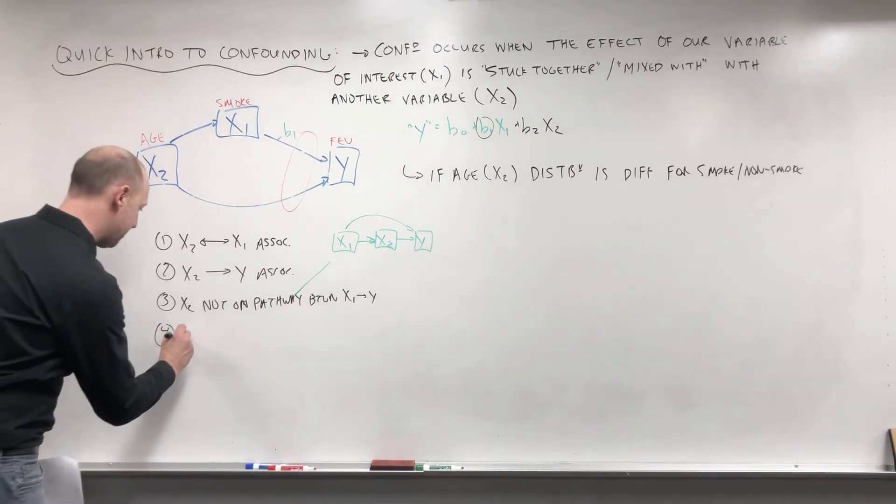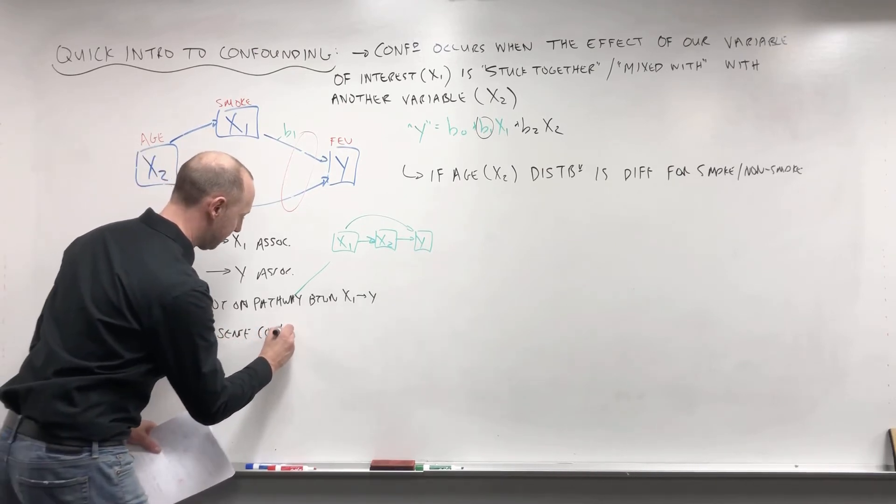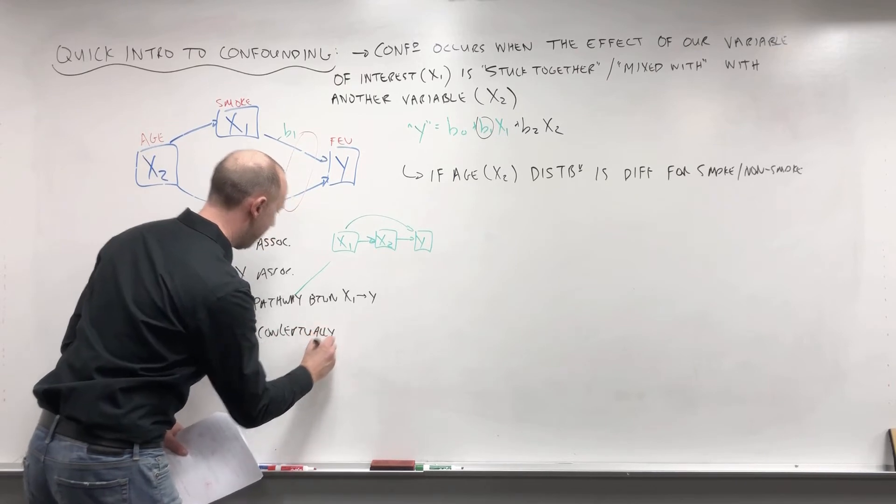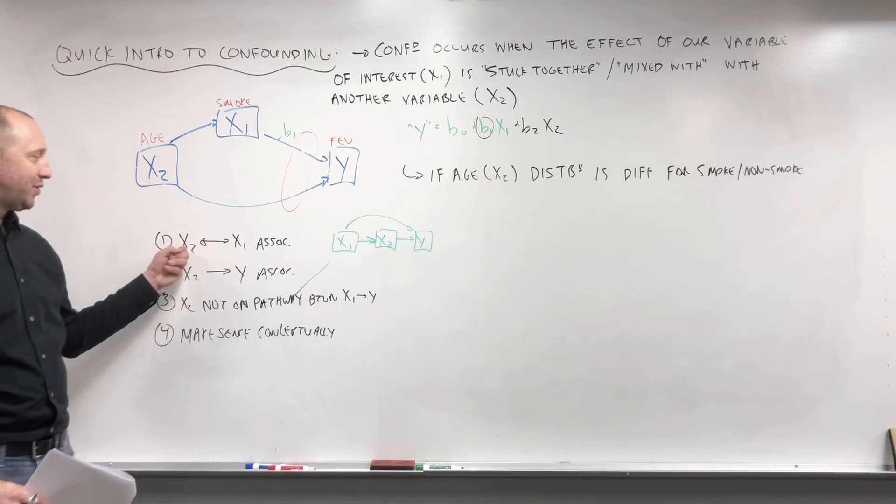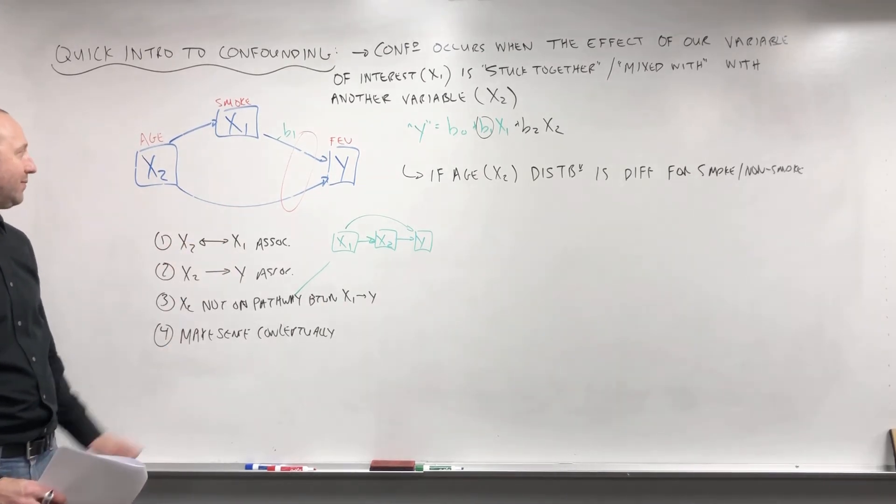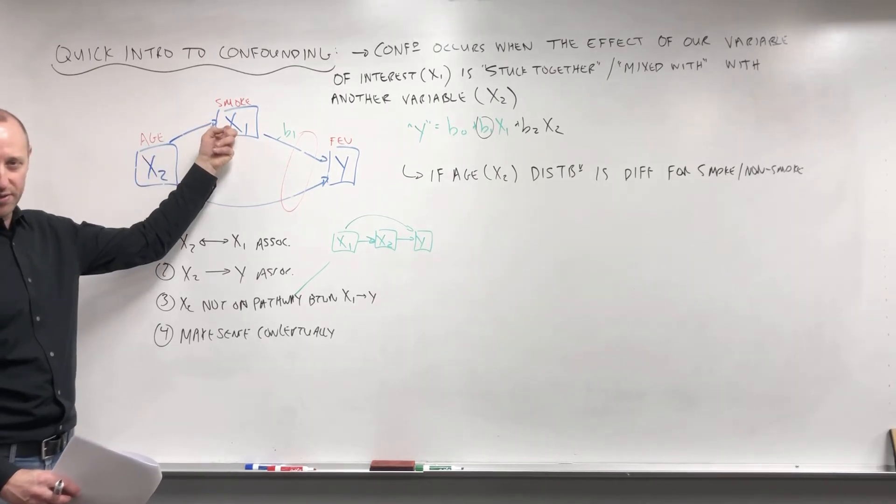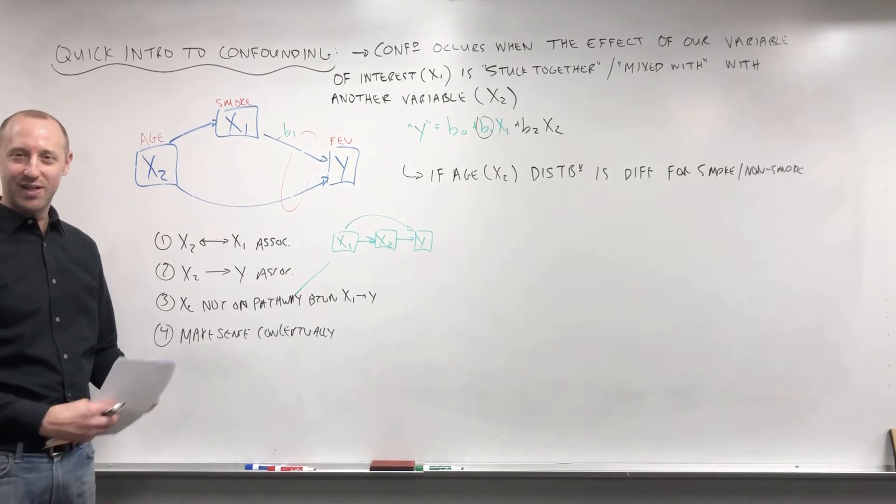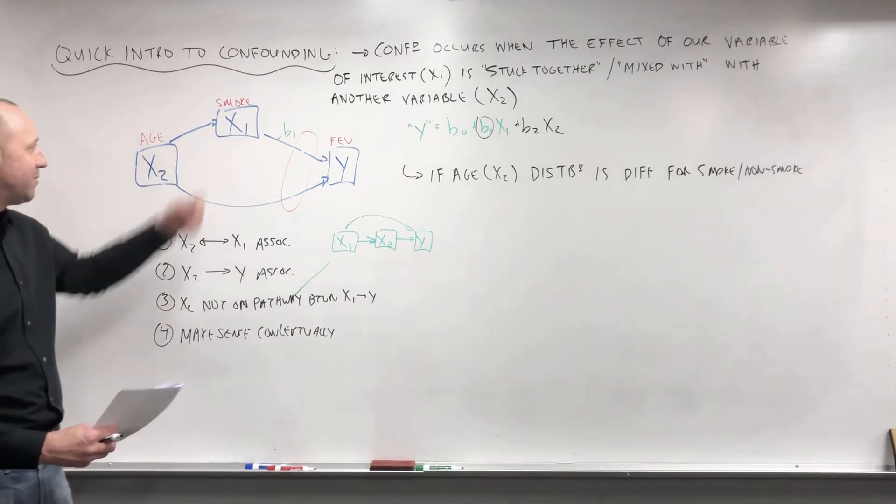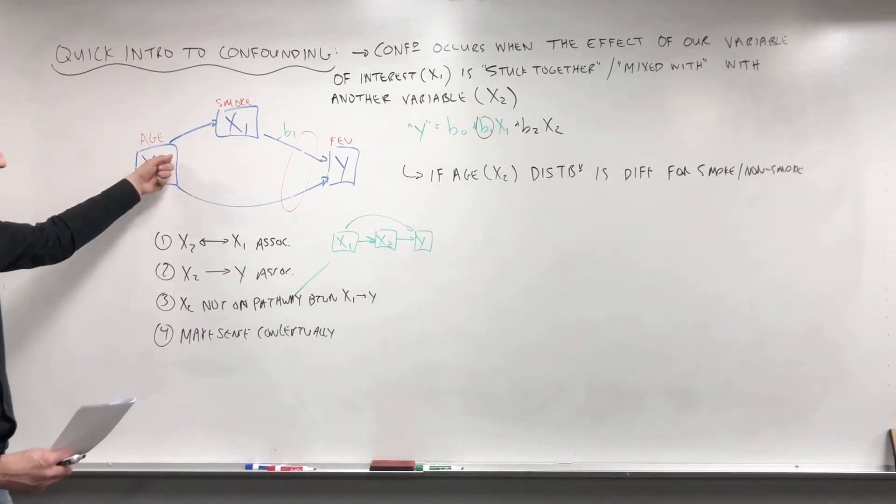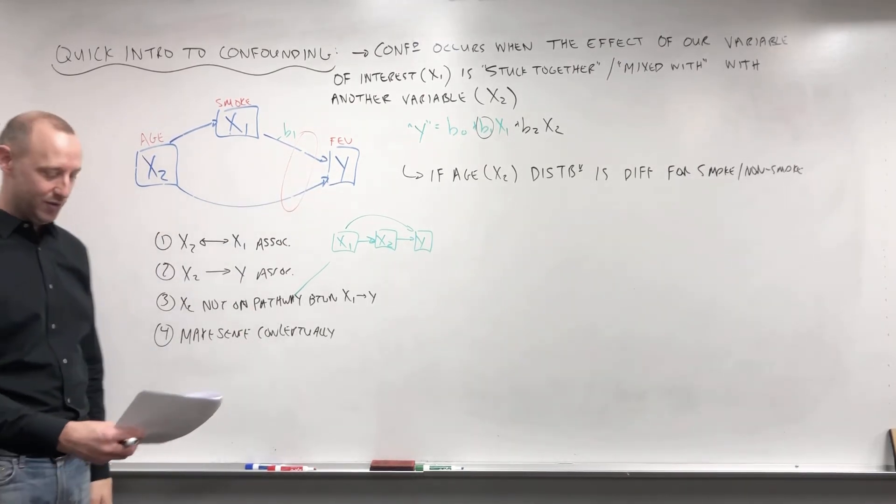And the final thing is that it should make sense conceptually. And what I mean by that is we don't want to just see that numerically X1 and X2 are associated, but that should make sense conceptually. Does it make sense that the age distribution of smokers and non-smokers would be different? I'd say yes, I think it does. If we're looking at a group of kids as they get older, they're more likely to smoke. Doesn't mean they're going to, but that association makes sense. Does it make sense that age has an effect on lung capacity? Yes it does—as kids get older their bodies get bigger, their lungs should get bigger.